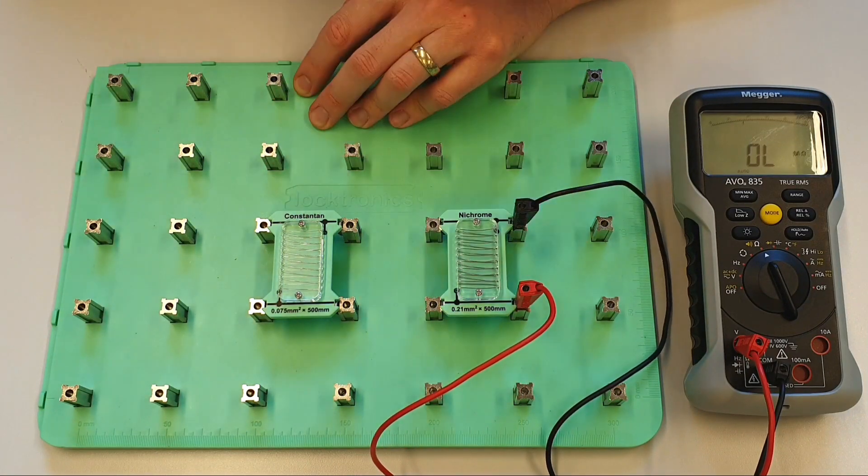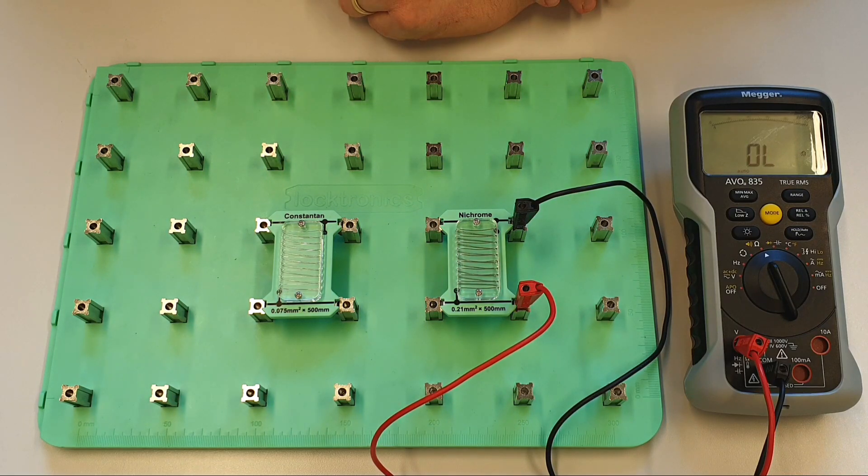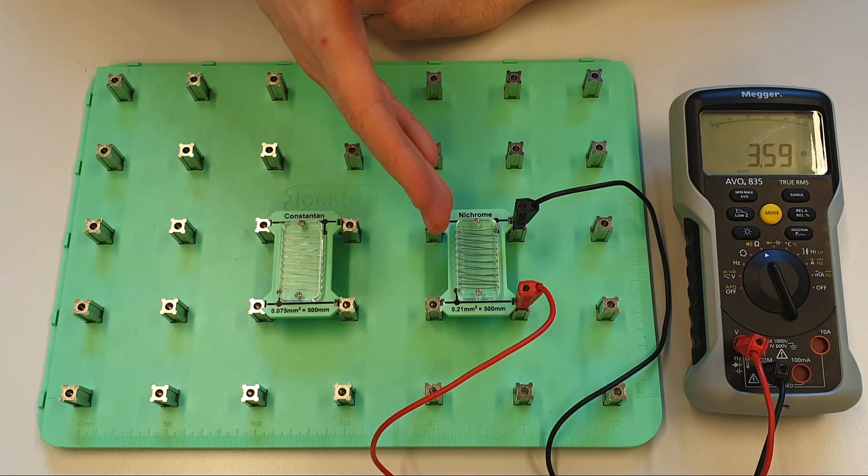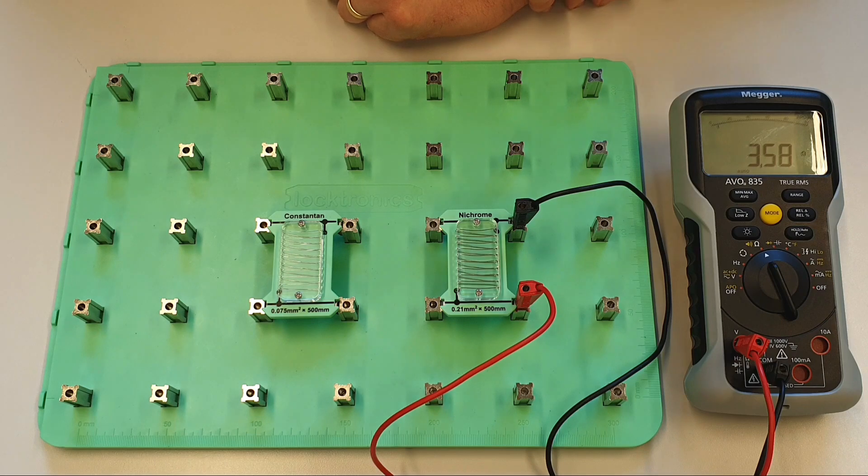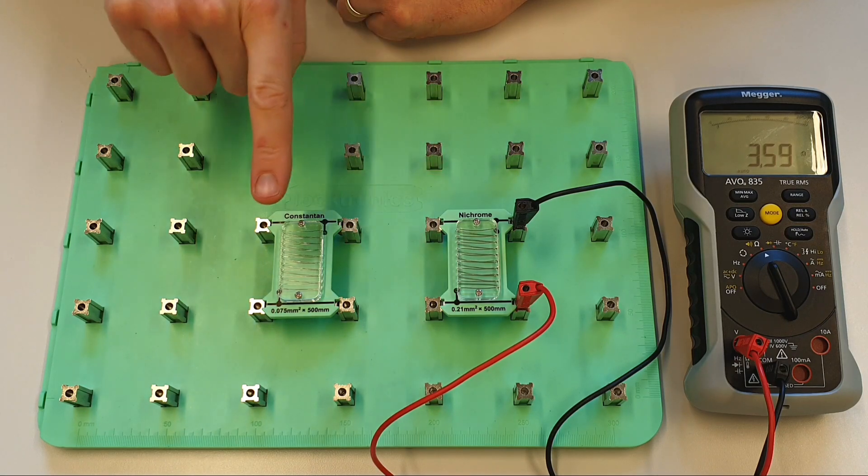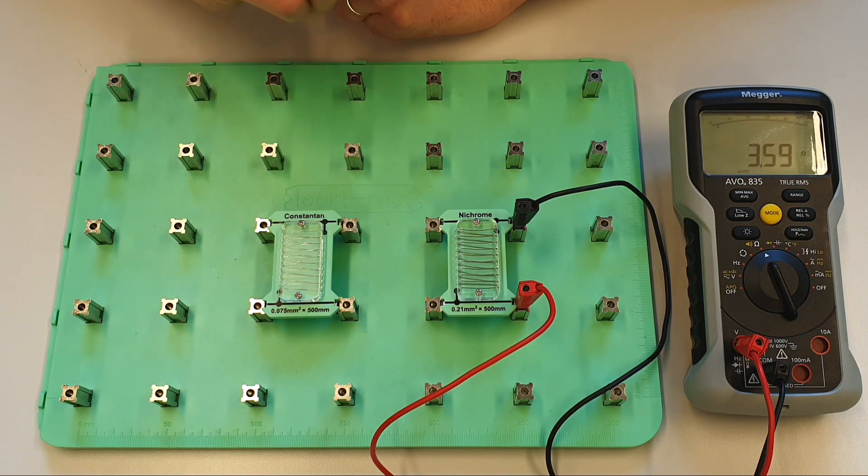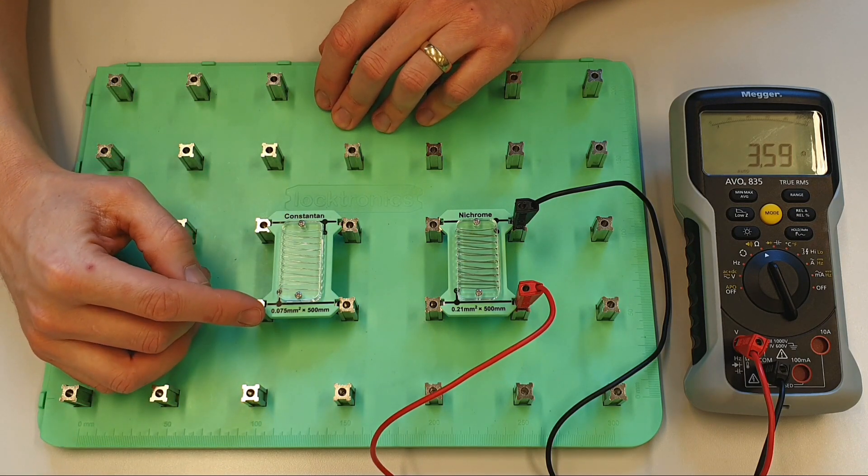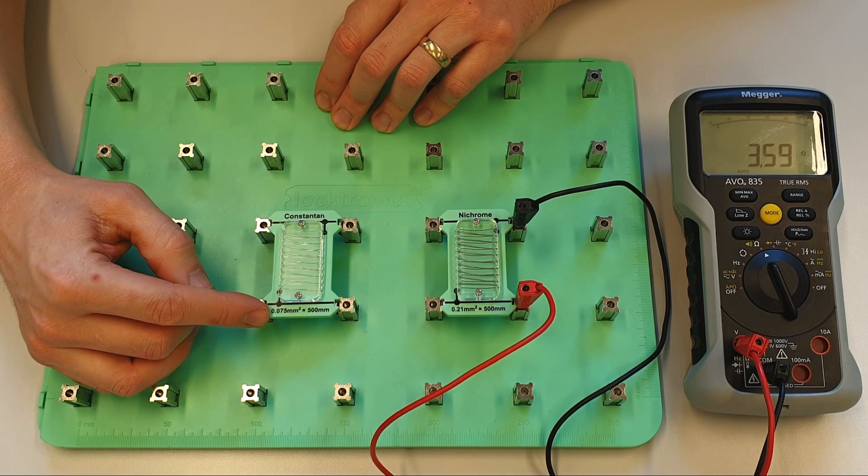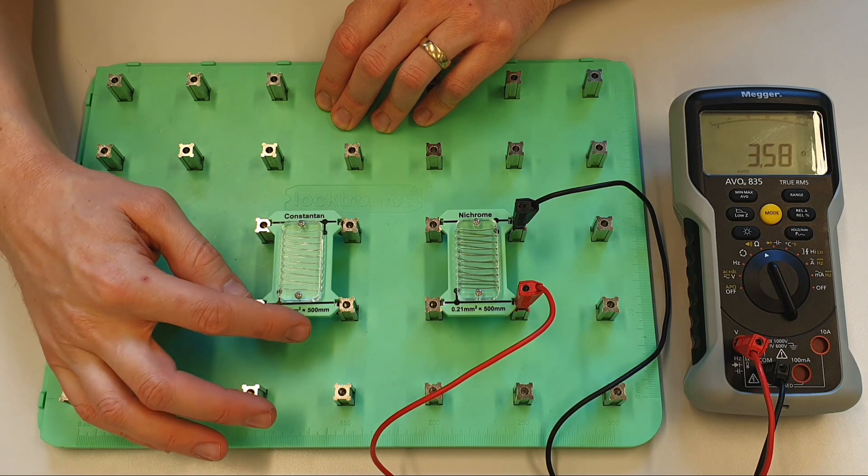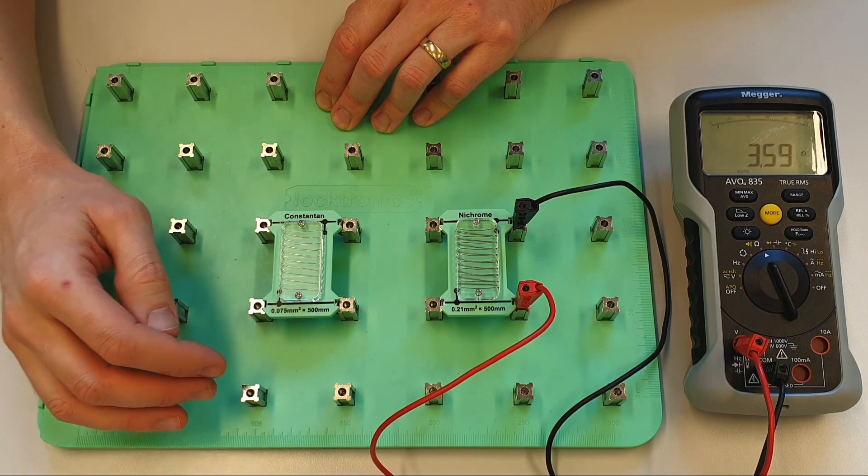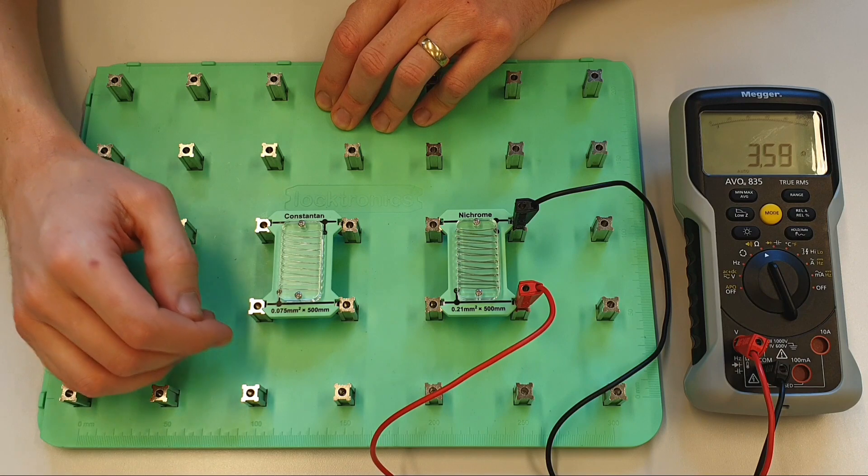Hello and welcome to this Electrical Principles training video. In a previous video in this series we've figured out what the resistivity of Nichrome is, we've figured out what its specific resistance is in ohm meters, and what we're going to do now is we're going to repeat this experiment using the Constantan, and the Constantan has some differences about it. You can see here that it's got a cross-sectional area of 0.075 millimeters squared, and once again we've got that same length as we had before of 500 millimeters or half a meter.